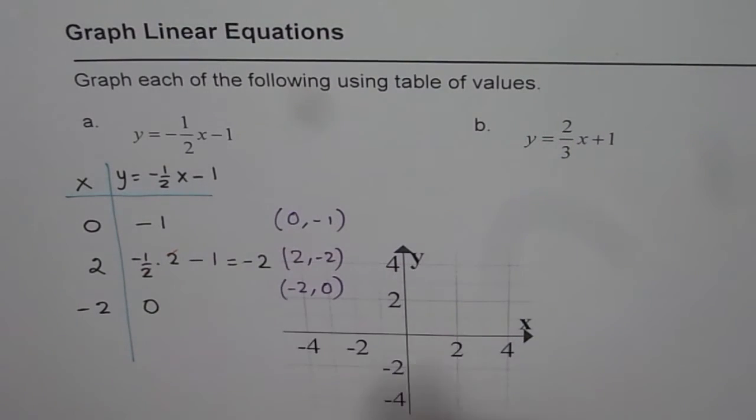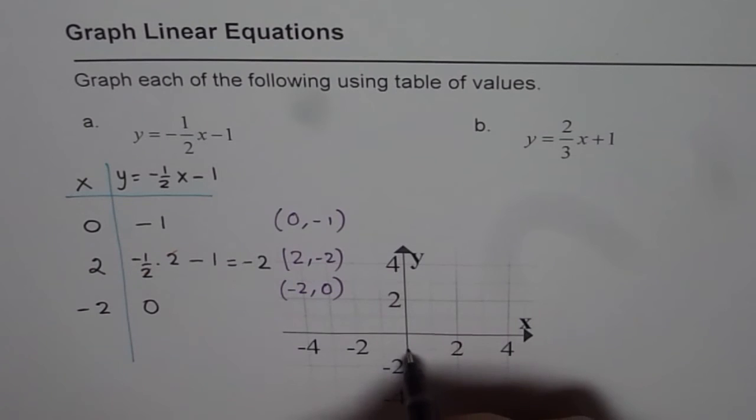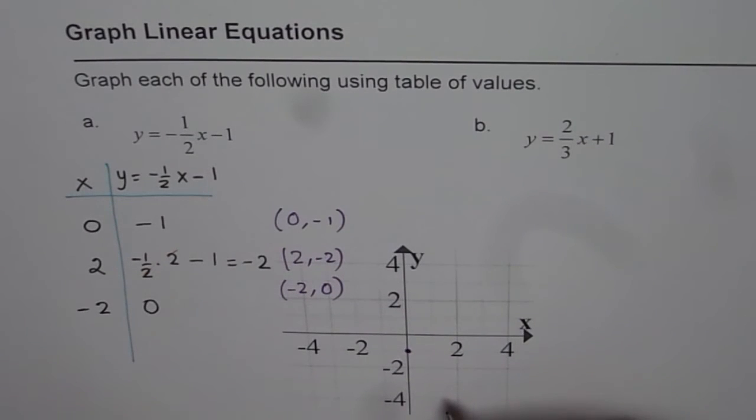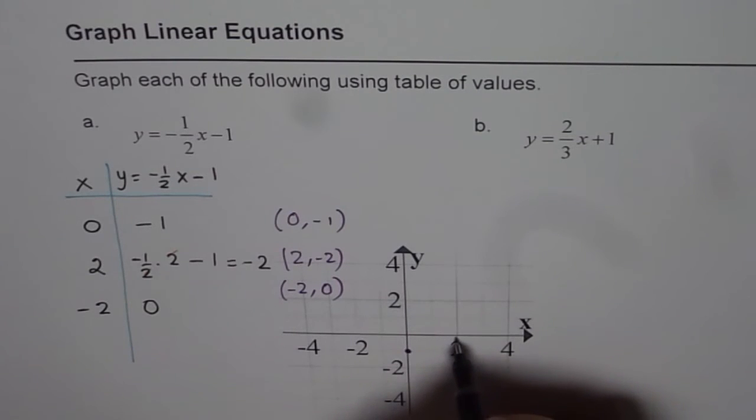0 minus 1. That means 0 minus 1. This is our y-intercept. This point is on the y-axis.